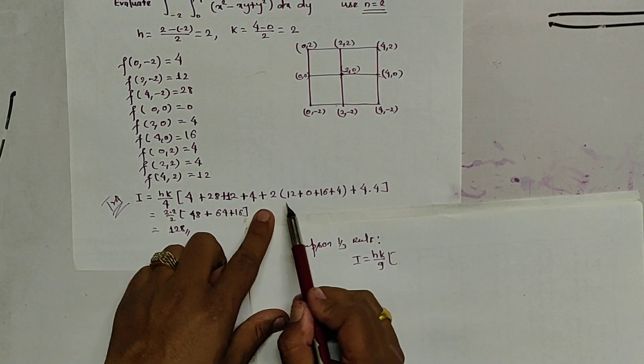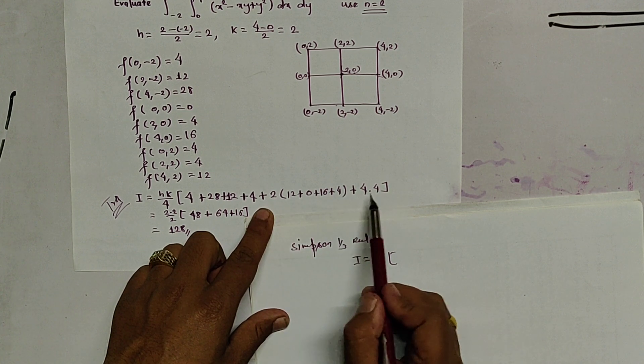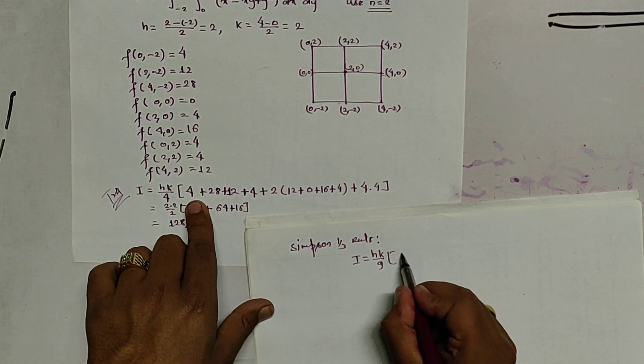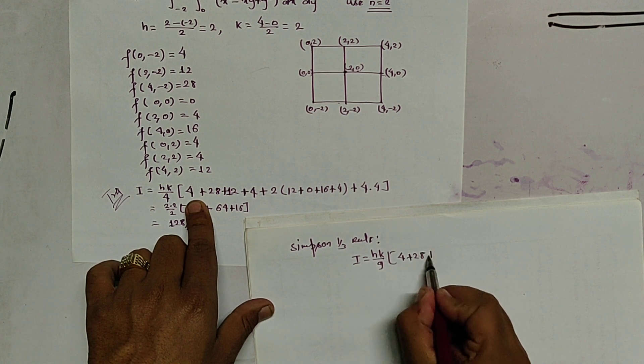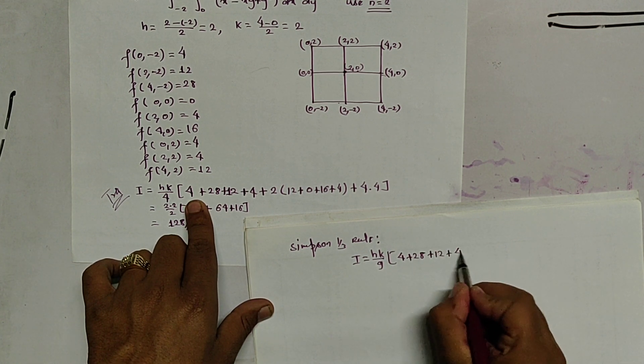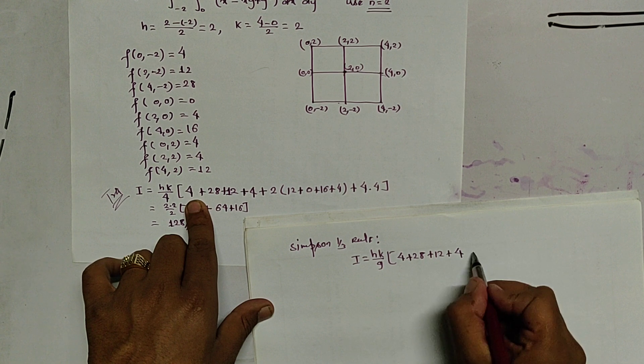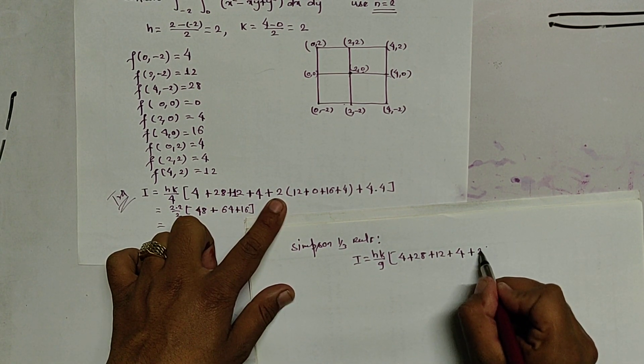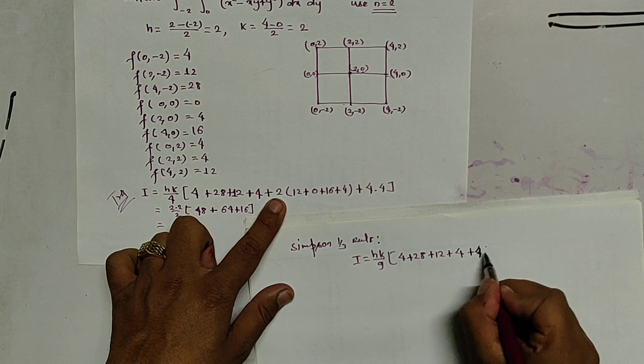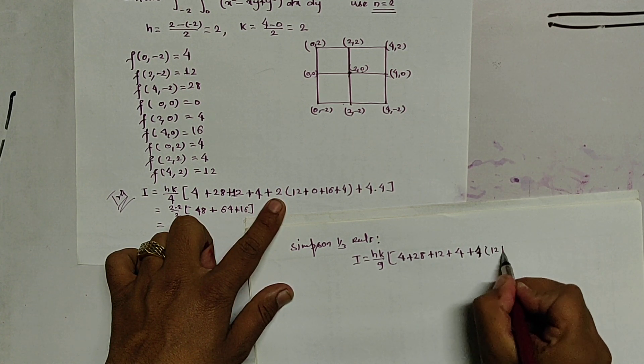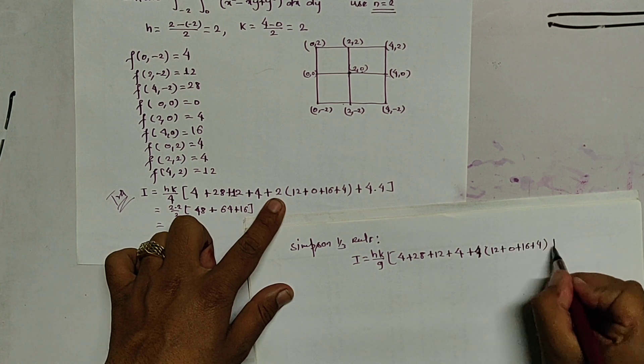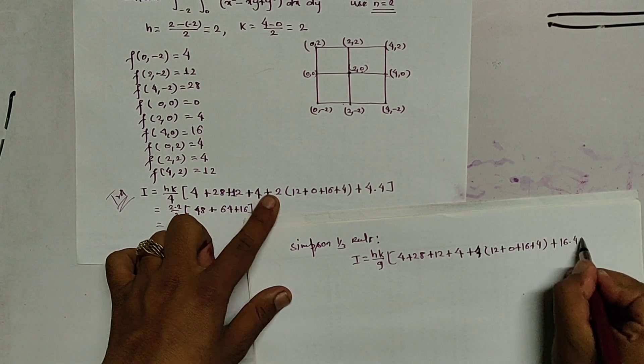Please review the previous video if you do not know that. So, these are multiplied by 4 and the center part is multiplied by 16. That means, this part is multiplied by 4 and this is multiplied by 16. So, we write the same. 4 plus 28 plus 12 plus 4. So, these are the four corners. They are not multiplied by any constant. So, next instead of 2, we use 4 here. 4 into 12 plus 0 plus 16 plus 4 plus 16 into 4.